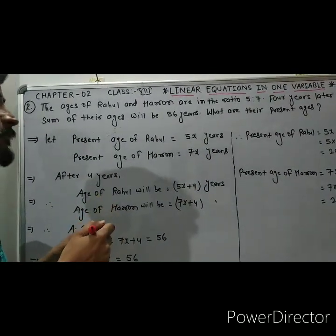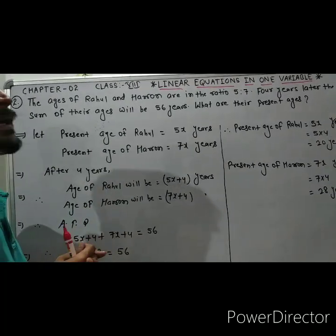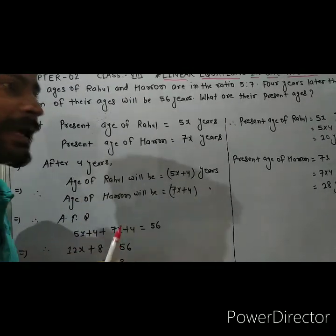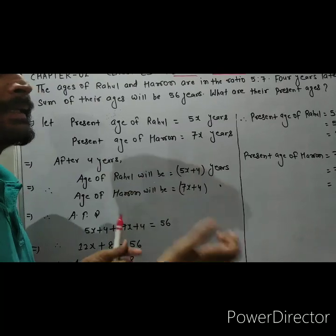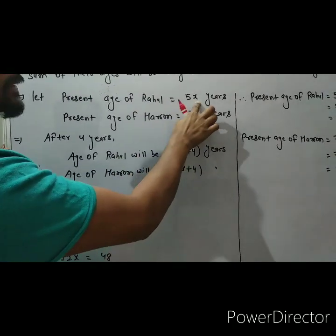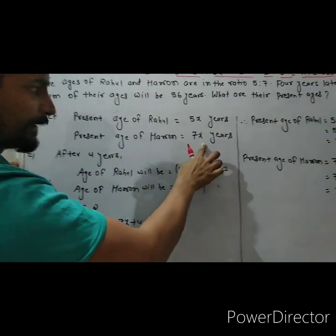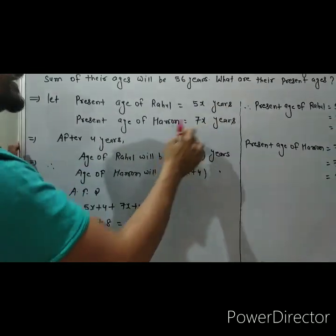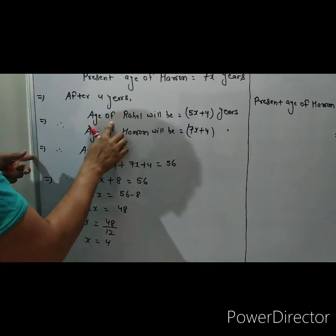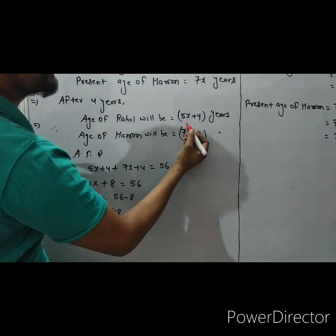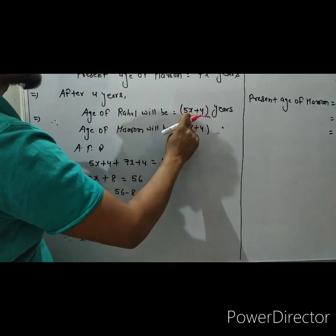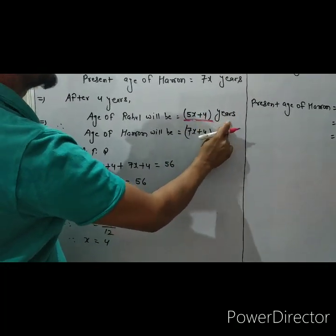After 4 years, if your age right now is 15 years, then after 4 years it becomes 19 years — we just add 4. Similarly, since present age of Rahul is 5x and present age of Haroon is 7x, after 4 years: age of Rahul will be 5x plus 4 years, and age of Haroon will be 7x plus 4 years.